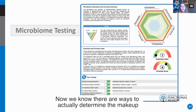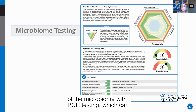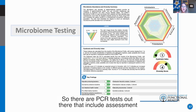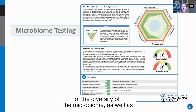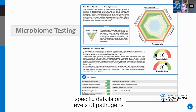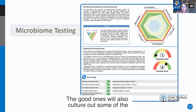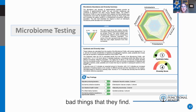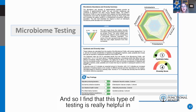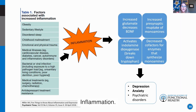We now have ways to determine the makeup of the microbiome with PCR testing. PCR tests can include assessment of microbiome diversity as well as specific details on levels of pathogens and beneficial bacteria. The good ones will also culture out some of the bad things they find, and I find this type of testing really helpful in treating my hard cases.